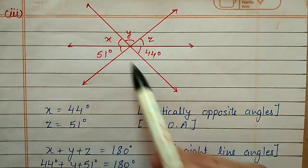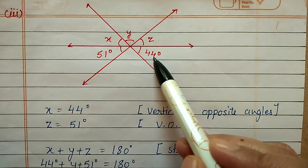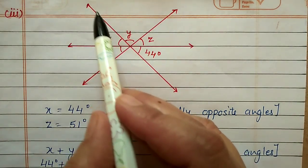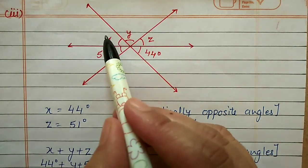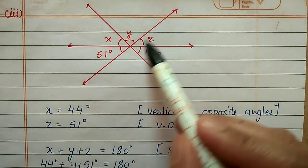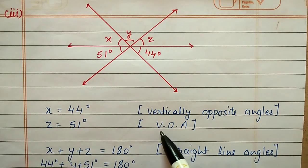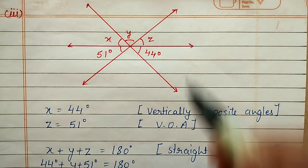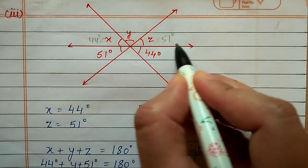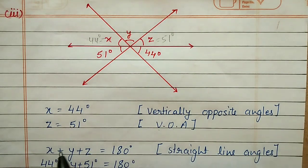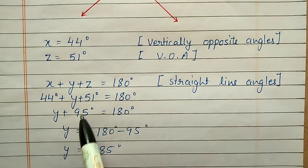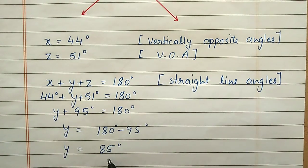Third part: three lines intersect with angles 51 degrees, 44 degrees, and unknowns x, y, z. Since x and 44 are vertically opposite, x = 44 degrees. Since z and 51 are vertically opposite, z = 51 degrees. Using straight-line property: x + y + z = 180, so 44 + y + 51 = 180, giving y = 180 − 95 = 85 degrees.